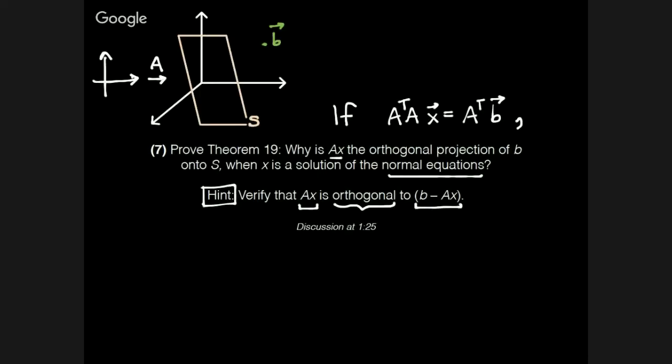And we end up with a vector, which is actually back here, x, which solves the normal equations, A transpose Ax is equal to A transpose B.